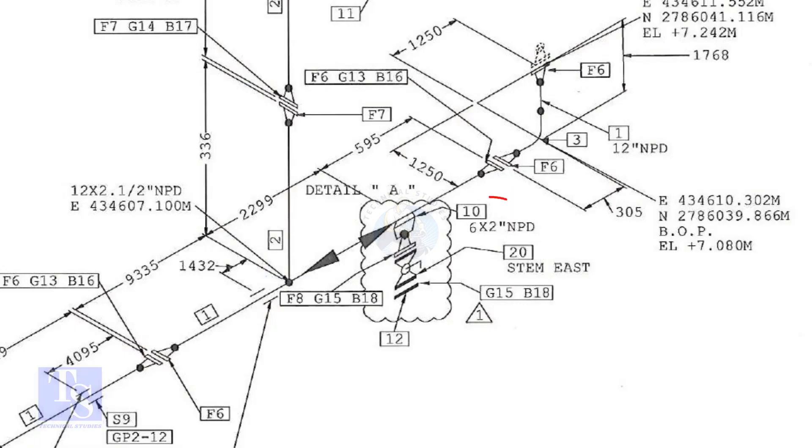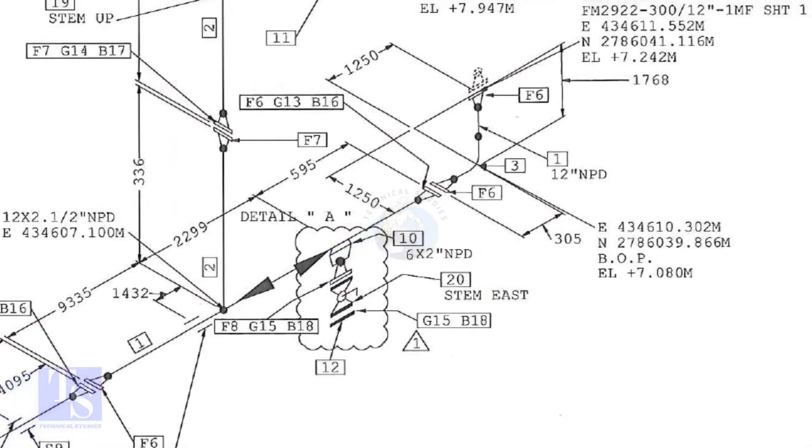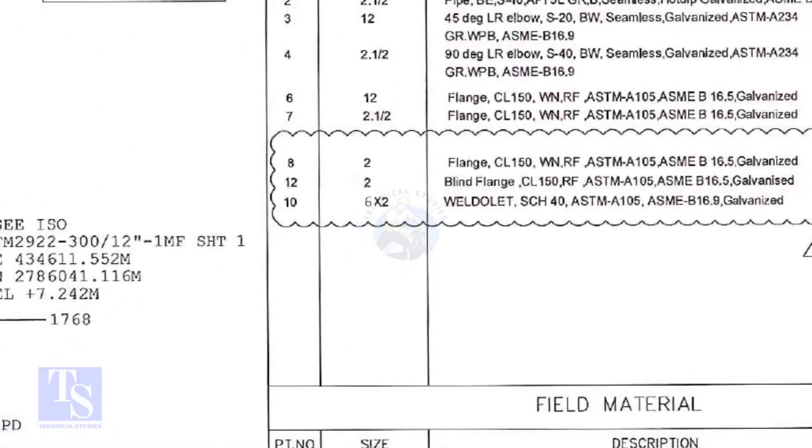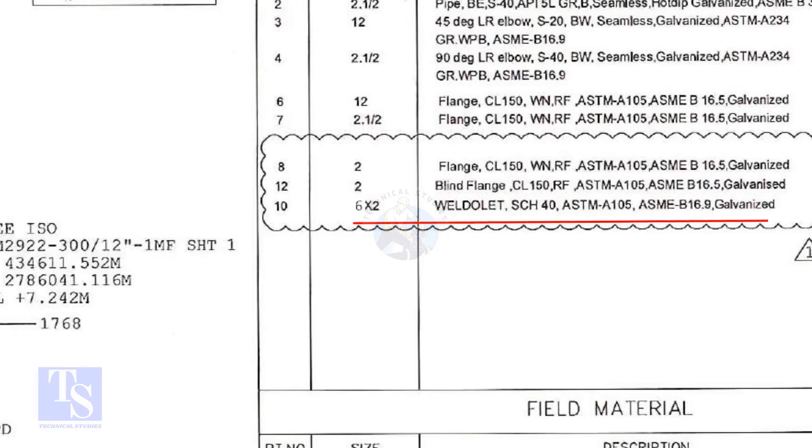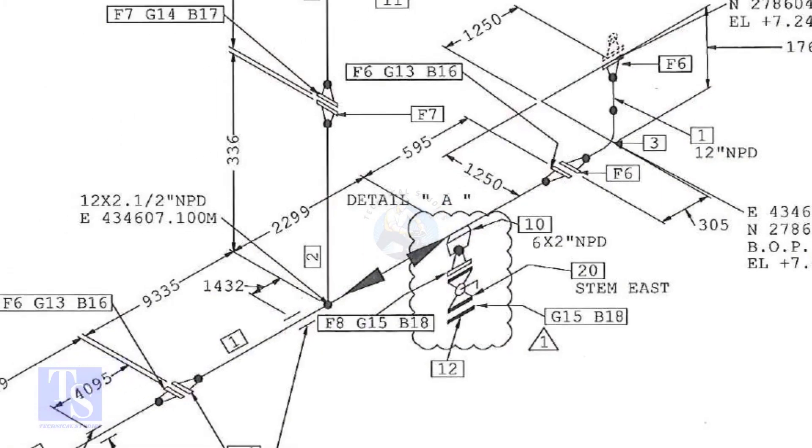In this drawing, the size of the weld-olet is 6 inch into 2 inch. Let us check what is item number 10 in the description. The center of the weld-olet is 595mm away from the face of the flange.